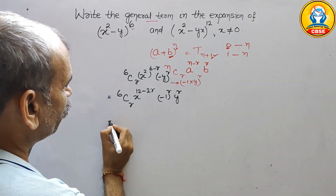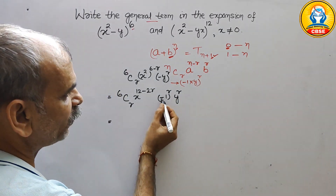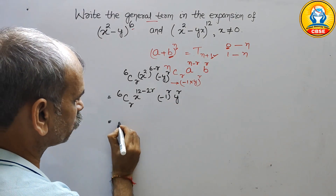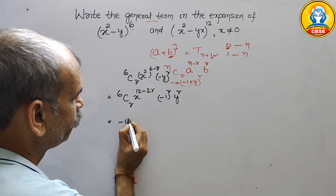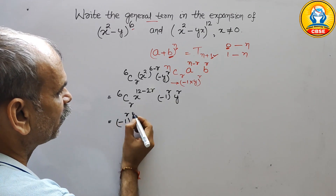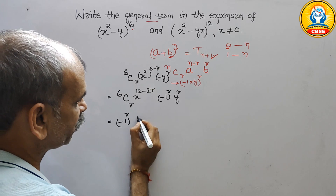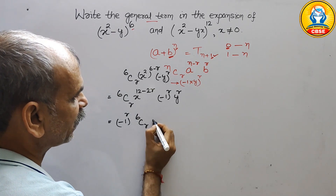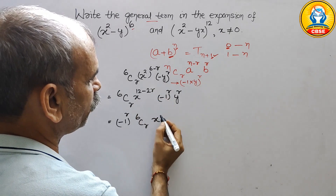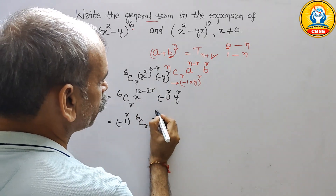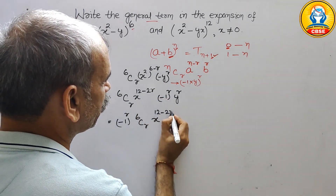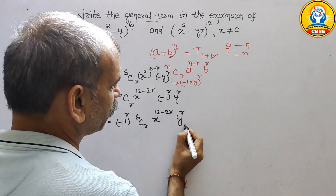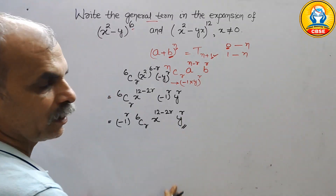Therefore, our general term for the first expression comes out as: 6Cr · (-1)^r · x^(12 - 2r) · y^r. So this is your general term for (x² - y)⁶.